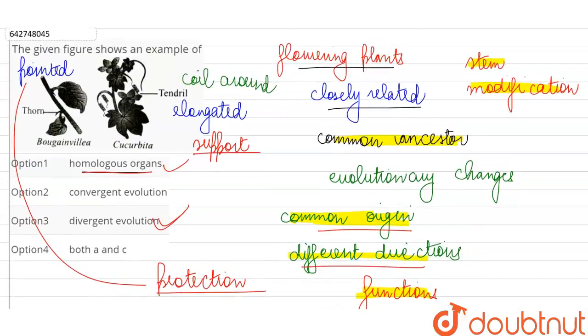So over here, both of these terms are associated with the image given to us. So correct answer is option D, both A and C is shown by these two plants. These homologous organs have developed because of divergent evolution of the same anatomical structure.